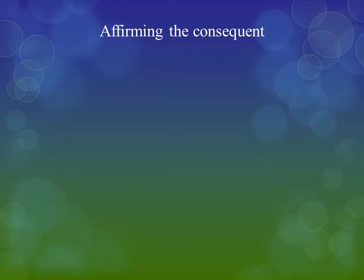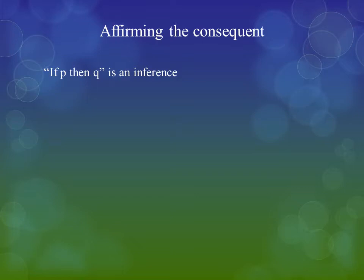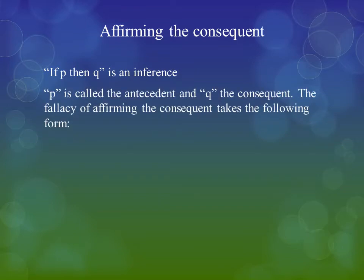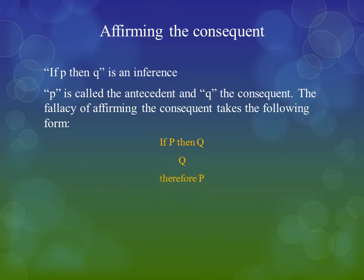Now let's look at two structures of invalid inferences — formal fallacies. The first one is called affirming the consequent. A little bit of vocabulary first: something like 'if P then Q' is called an inference — it's the movement that goes from claiming one claim to the other. In an inference, the first term, usually represented by the letter P, is called the antecedent. Q is the consequent. The fallacy of affirming the consequent takes the following structure: If P then Q. And Q — this second premise is when I affirm the consequent. Therefore, P.